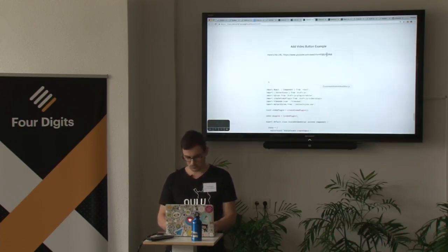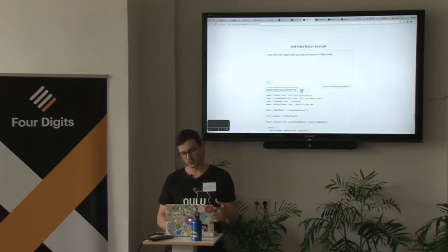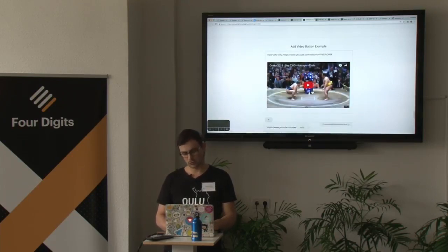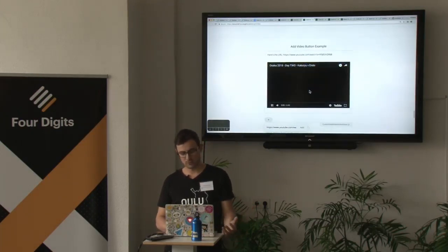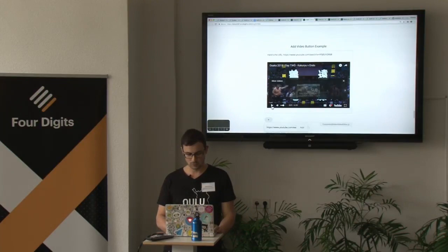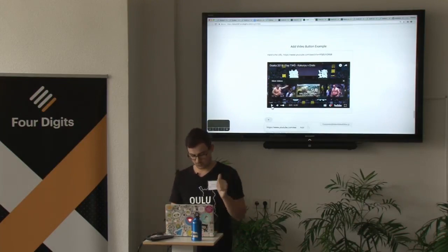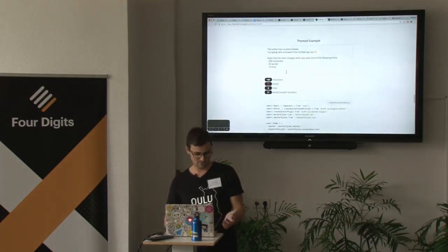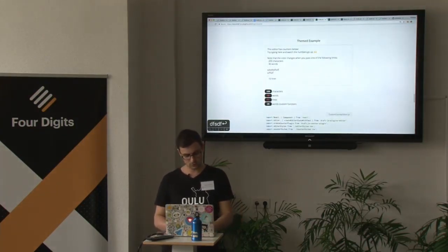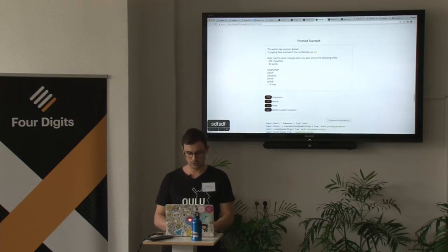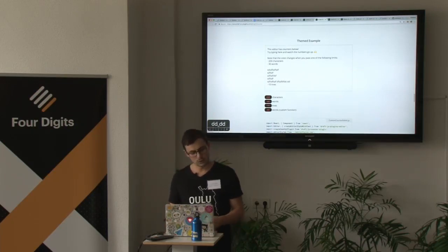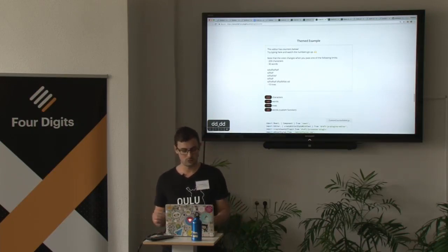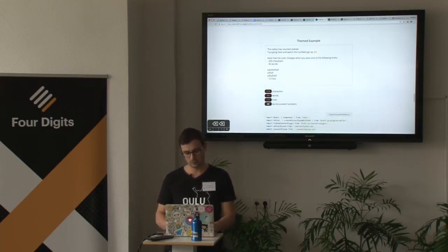Another quick example: videos and embeds. We have those in Wagtail already, but I want to show we're not limited to the current implementation. Here I paste a YouTube URL into this field and it automatically shows you the player. There's also a more advanced counter plugin that counts the characters, words, lines, and so on. I think this is particularly cool because it has nothing to do with rich text — you can use this on any type of field even if it's just plain text, and it's equally useful. Definitely worth having in Wagtail in my opinion.